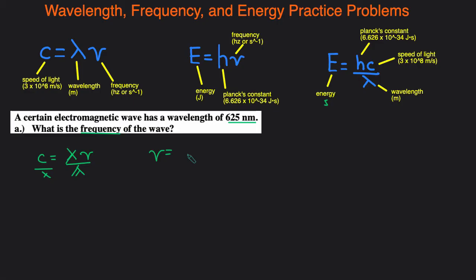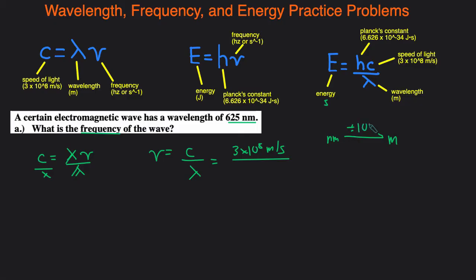That gives us nu equals c divided by wavelength. We have c already — that's the speed of light, 3 times 10 to the 8th meters per second. The wavelength is given as 625 nanometers, but remember wavelength has to be in meters, so we need to do a conversion. The shortcut: if you have nanometers and want meters, divide by 10 to the 9. So 625 divided by 10 to the 9 gives us 6.25 times 10 to the negative 7 meters.